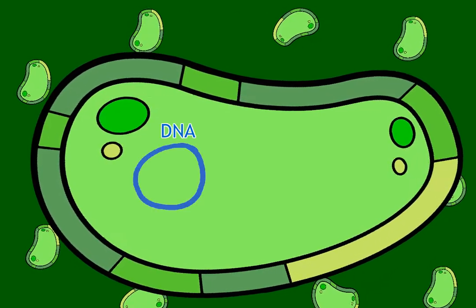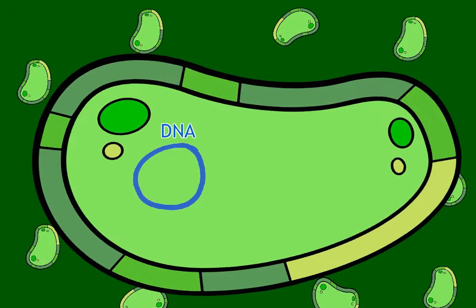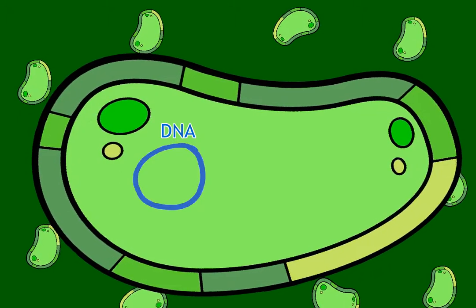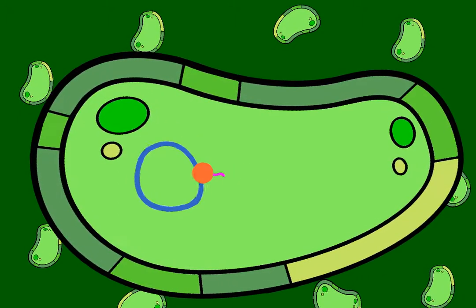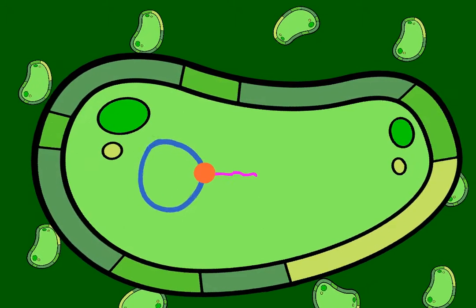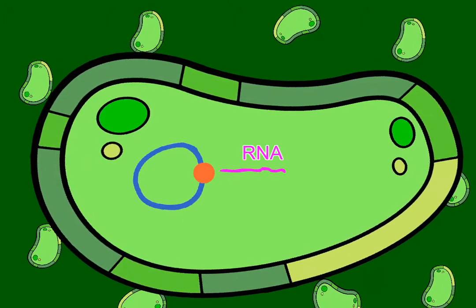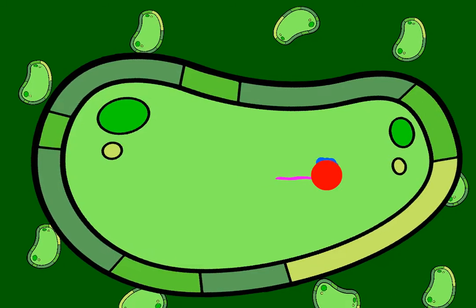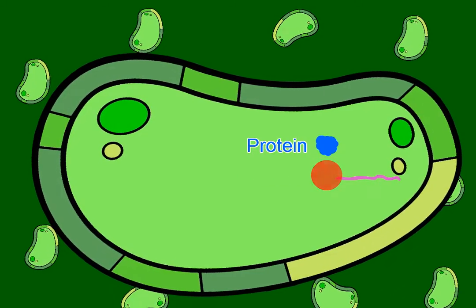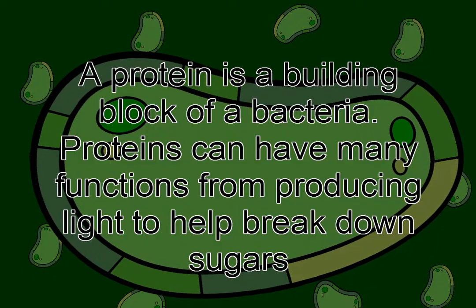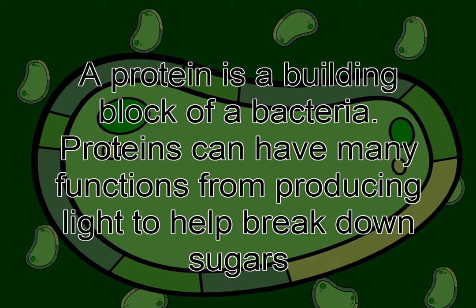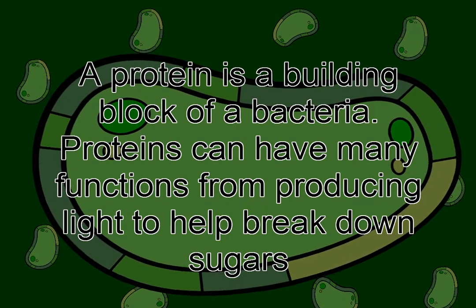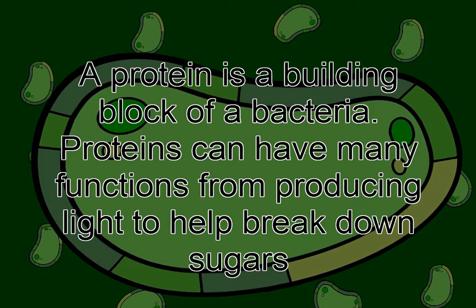The function of a bacterium is determined by its DNA. In order to use this DNA, an RNA polymerase makes an RNA copy of the DNA. This RNA can then be read by a ribosome, which finally makes a protein based on it. A protein is the building block of bacteria. Proteins can have many functions, from producing light to helping break down sugars.